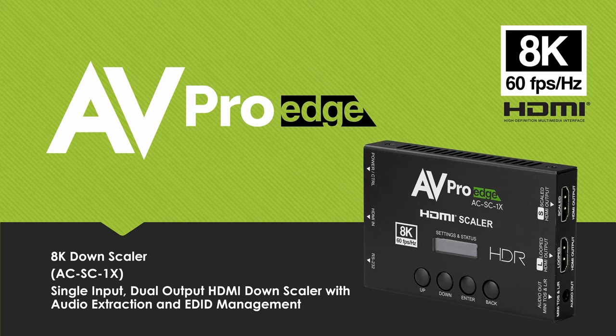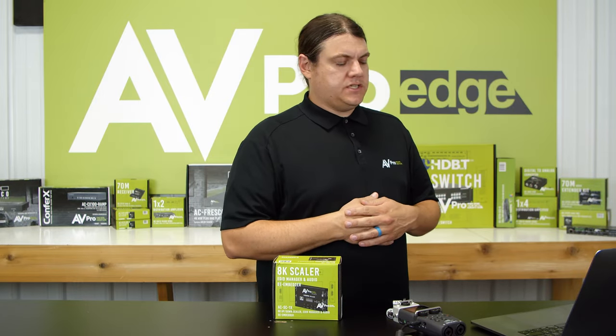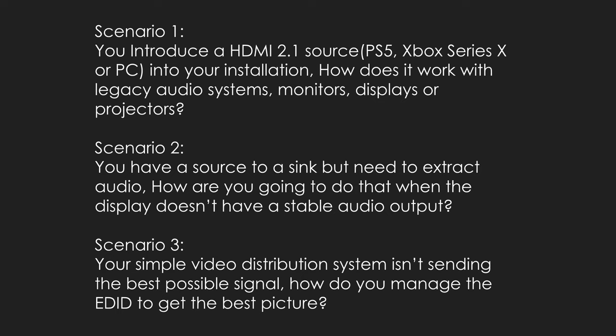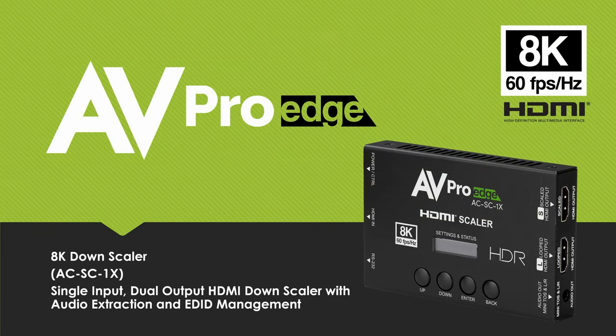Welcome everybody to this webinar. My name is Tom Devine. Let's look at three scenarios. Scenario one: you introduce an HDMI 2.1 source — a PS5, Xbox Series X, or PC — into your installation. How does that work with legacy devices like monitors, TVs, projectors, and audio systems? Scenario two: you need to extract audio when the display doesn't have stable audio input or you're dealing with an HDMI 2.1 source. Scenario three: your simple video distribution system isn't sending the best possible signal — how do you manage EDID to get the best picture? Today we're going to talk exactly about that.